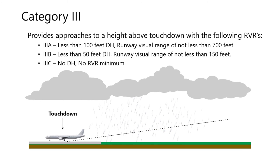Category 3 provides approaches to a height above touchdown with the following RVRs. Category 3A less than 100 feet decision height with a runway visual range of not less than 700 feet.